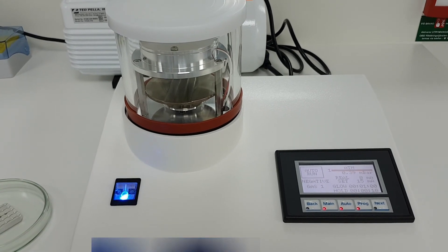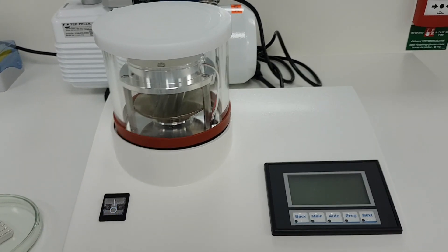Remember to turn off the system. This concludes Sample Preparation Part 1, Grid Glow Discharge. The next step in sample preparation is negative staining.